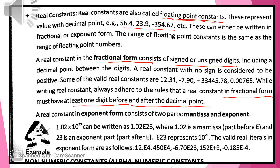Signed means it will have a negative sign; no sign means it is a positive number. You can see examples of valid real constants: 12.31, minus 7.90 — all these are real constants. While writing real constants, always follow the rule that a real constant in the fractional form must have at least one digit before and after the decimal point.